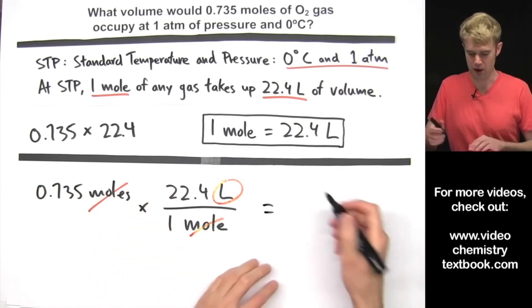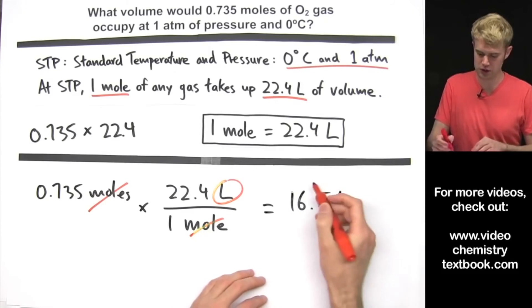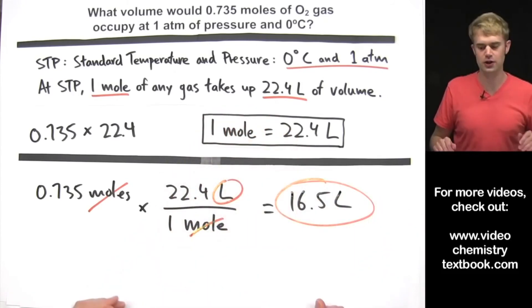This times this divided by 1 is going to be 16.5 liters, which as we predicted is a little bit less than 22.4 liters. We're going to do one more. Here we go.